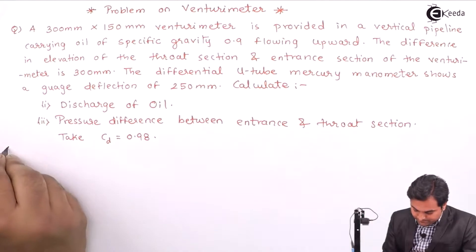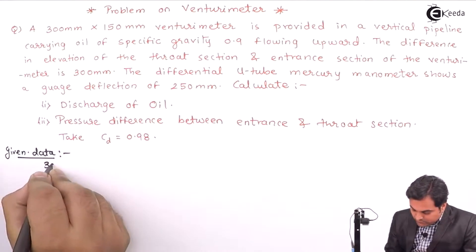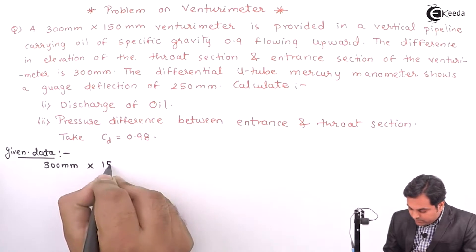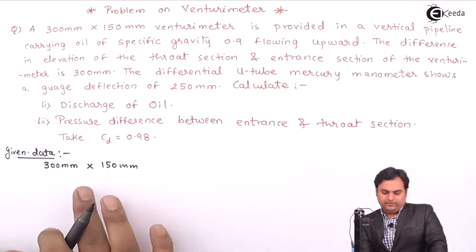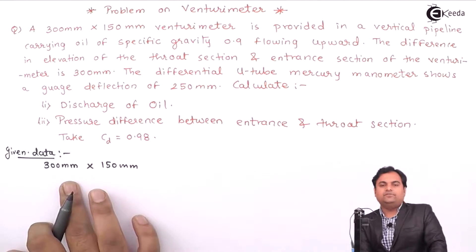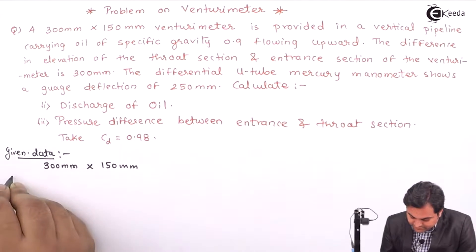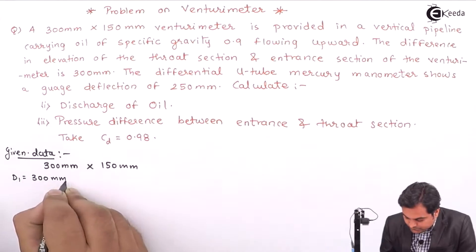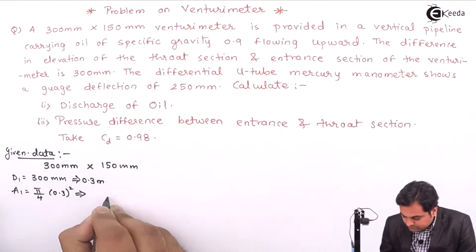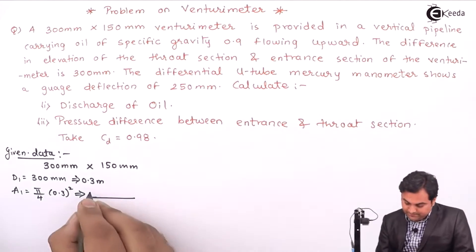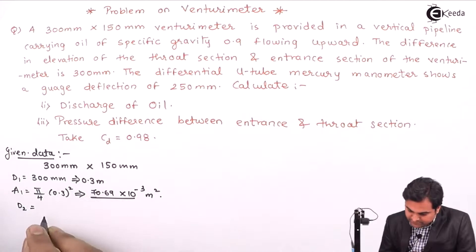Now I'll write the data accordingly. The cross section given is 300 mm x 150 mm venturimeter. The first value indicates the diameter of the pipeline or entrance section of the venturimeter, and the smaller value is the throat diameter. So D1 is 300 mm, which is 0.3 meter, and accordingly area A1 comes out to be 70.69 x 10^-3 meter square.